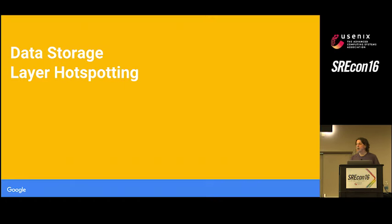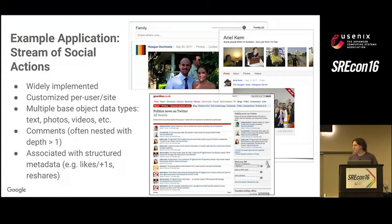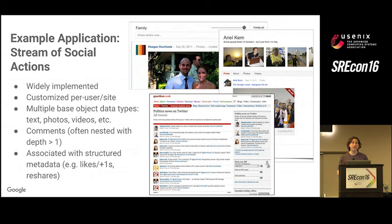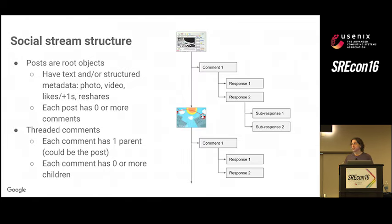Now let's talk about data storage layer hotspotting, which is really about virality. I'll use an extended example of a stream of social actions — this might be your news feed in Facebook, your list of plus ones, or the list of rides and kudos in the Strava application. It's widely implemented and everyone should be familiar with it. You tend to have personalized views of data based on what your graph looks like. You might have a bunch of posts with a tree of comments — all very familiar.